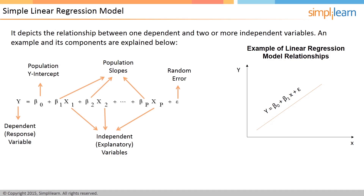To understand this model, we'll first look at a few assumptions. The simple linear regression model depicts the relationship between one dependent and two or more independent variables. The assumptions which justify the use of this model are: a linear and additive relationship between the dependent and independent variables; multivariate normality; little or no collinearity in the data; little or no autocorrelation in the data; and homoscedasticity — that is, variance of errors the same across all values of X. The equation for this model is shown on the screen.